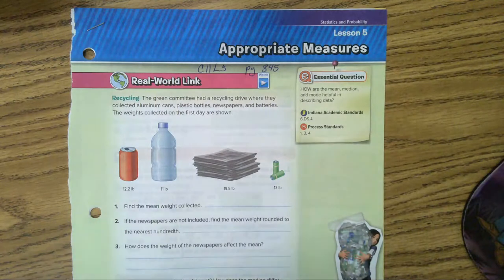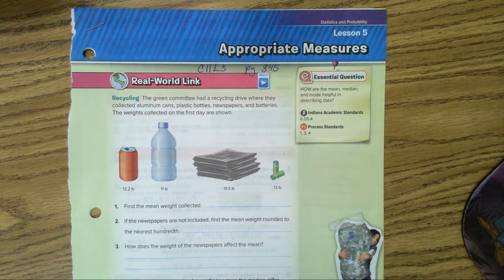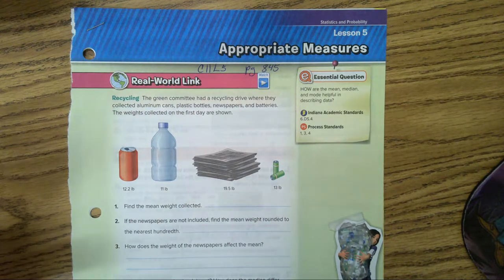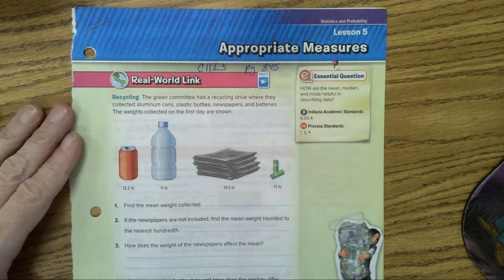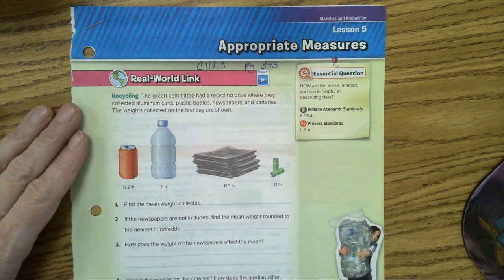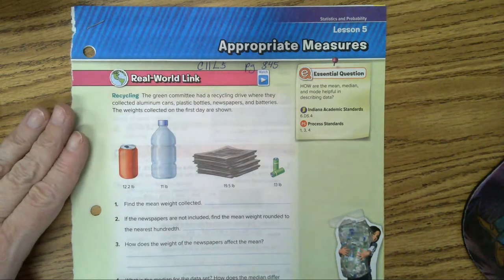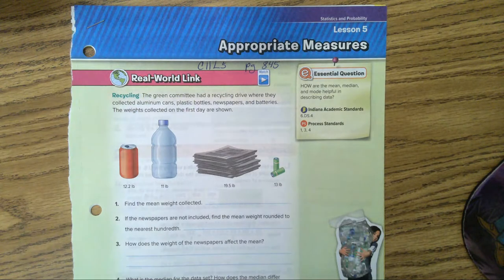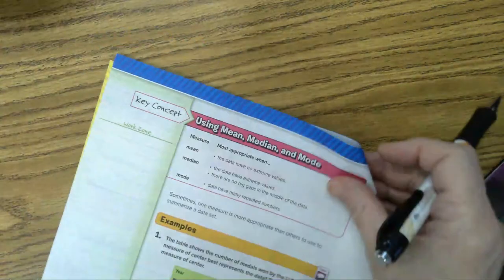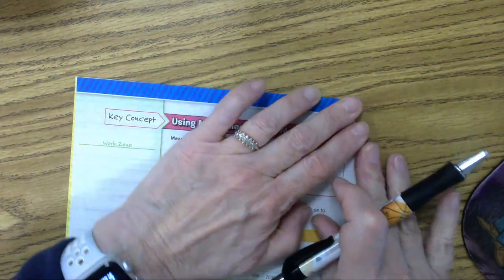Okay, Chapter 11, Lesson 5, Appropriate Measures, located on page 845. You can go get a drink if you have the hiccups. Take the pass so you don't get in trouble. All right, now, we're going to go to the next page because we're a little short on time and I want to get into the definitions of a few things here.